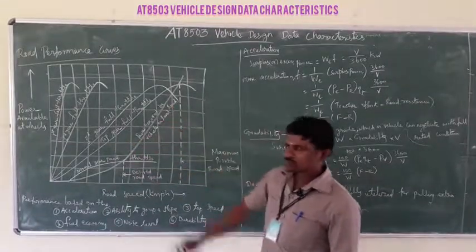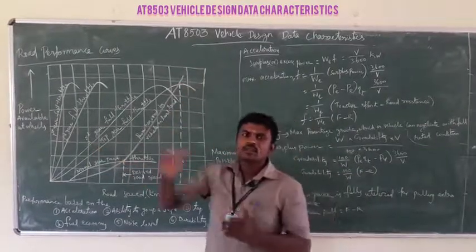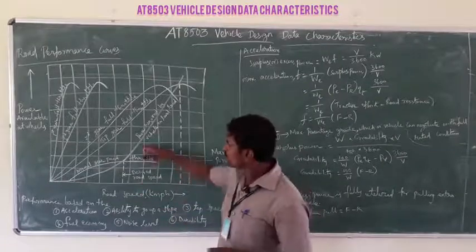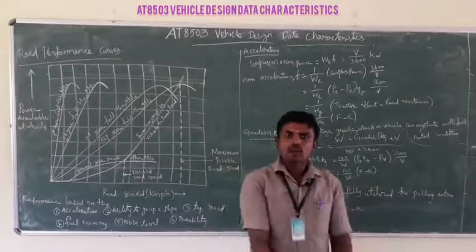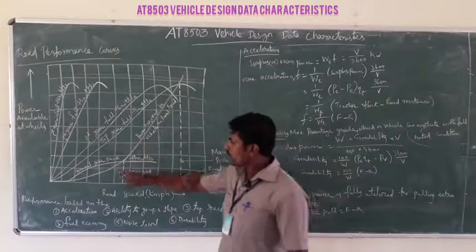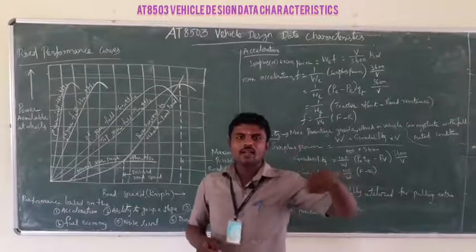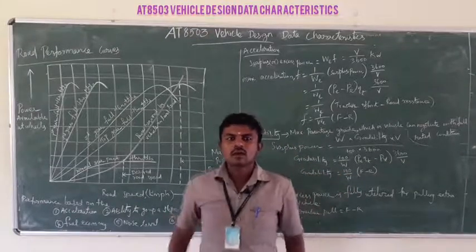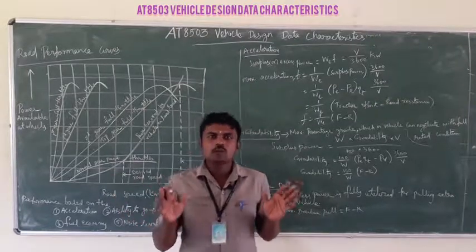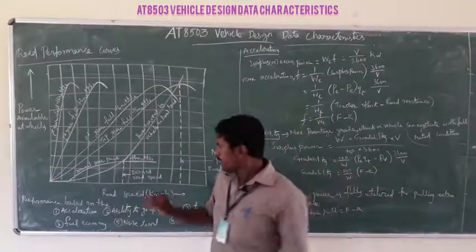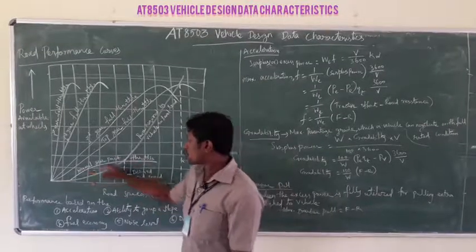This is the power requirement curve for the vehicle moving on the level road — how much power is required for a particular vehicle on a level road. Next, this is the normal gear for throttle in the idle condition. When you just start the car and it is not moving, how much fuel enters into the engine — that is the throttle condition.